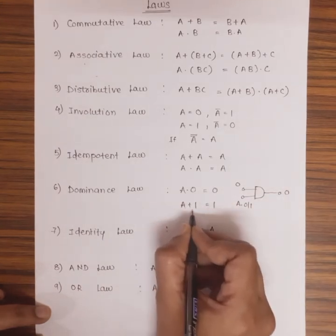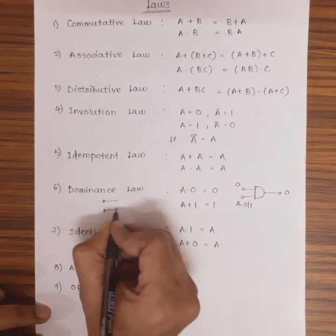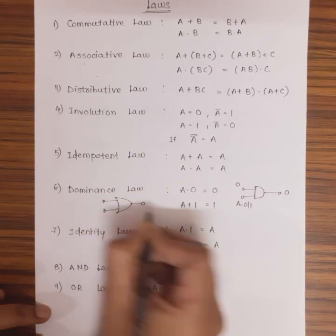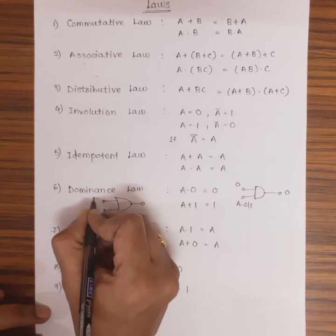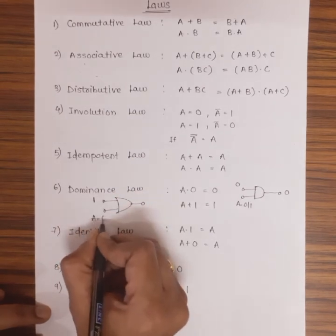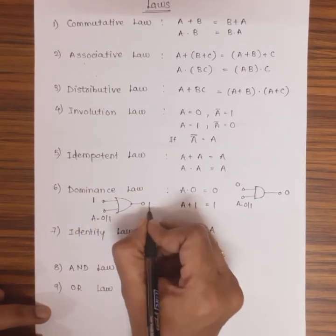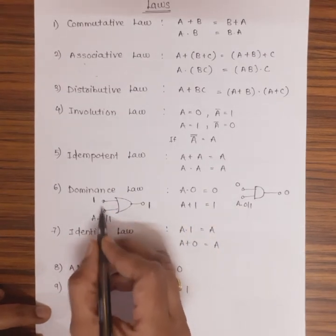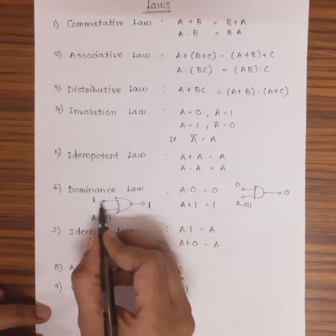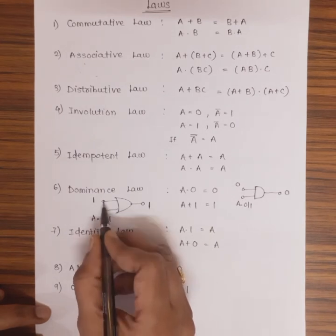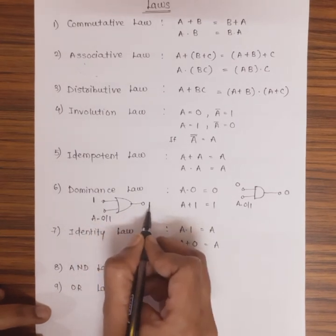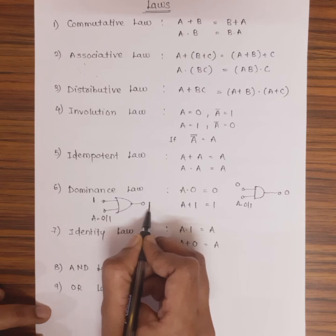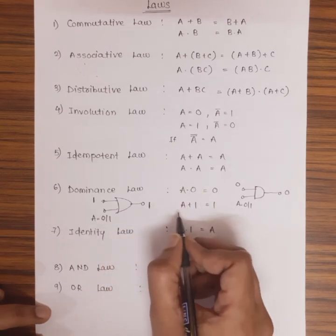Similarly, A + 1 = 1. It indicates that if one of the inputs of the OR gate is connected to 1, then irrespective of the another input, the output is going to be 1. If another input is 0, then 1 + 0 is 1. If another input is 1, still the output remains 1. So this unknown second input is shown by A.